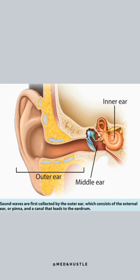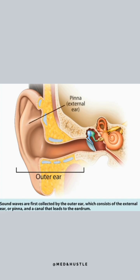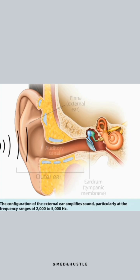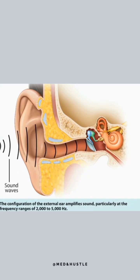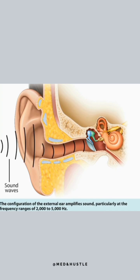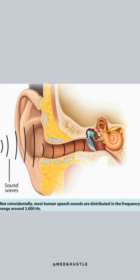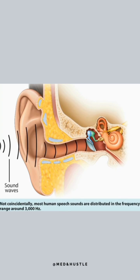Sound waves are first collected by the outer ear, which consists of the external ear, or pinna, and a canal that leads to the eardrum. The configuration of the external ear amplifies sound, particularly at the frequency ranges of 2,000 to 5,000 Hz. Not coincidentally, most human speech sounds are distributed in the frequency range around 3,000 Hz.